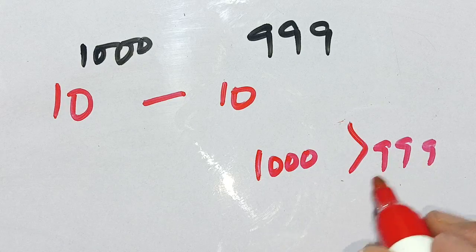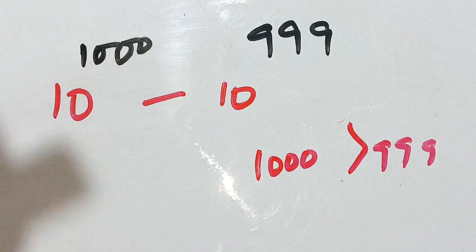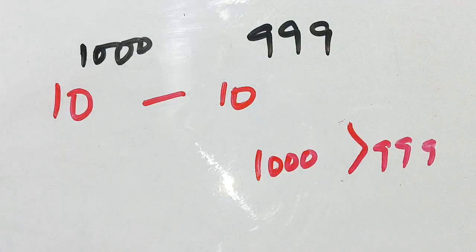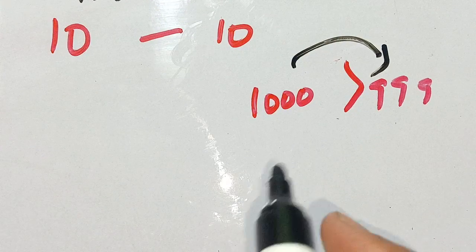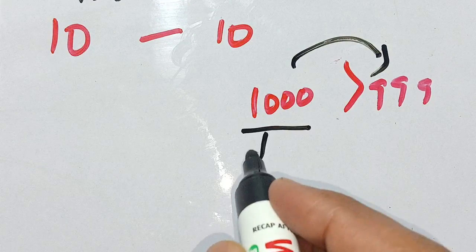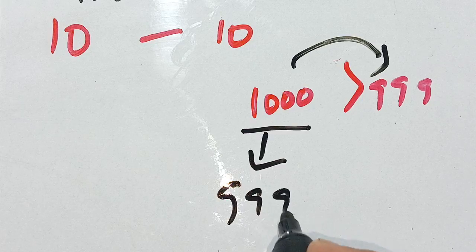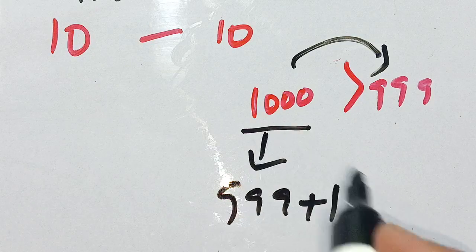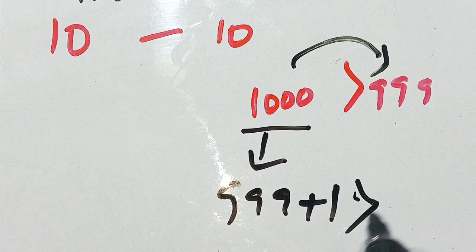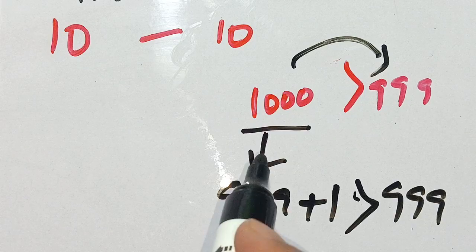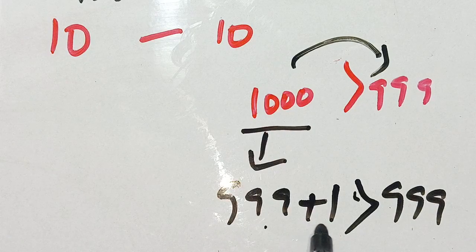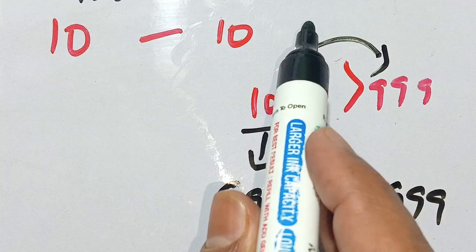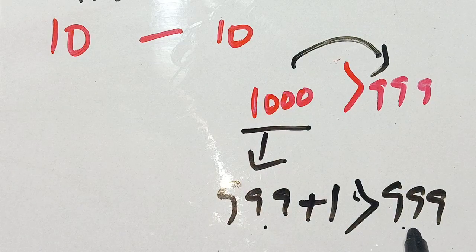We see that 1000 is greater than 999, so 1000 can be written in terms of 999. That means 1000 can be broken down as 999 plus 1. So in place of 1000 we put 999 plus 1, and 999 remains as it is.